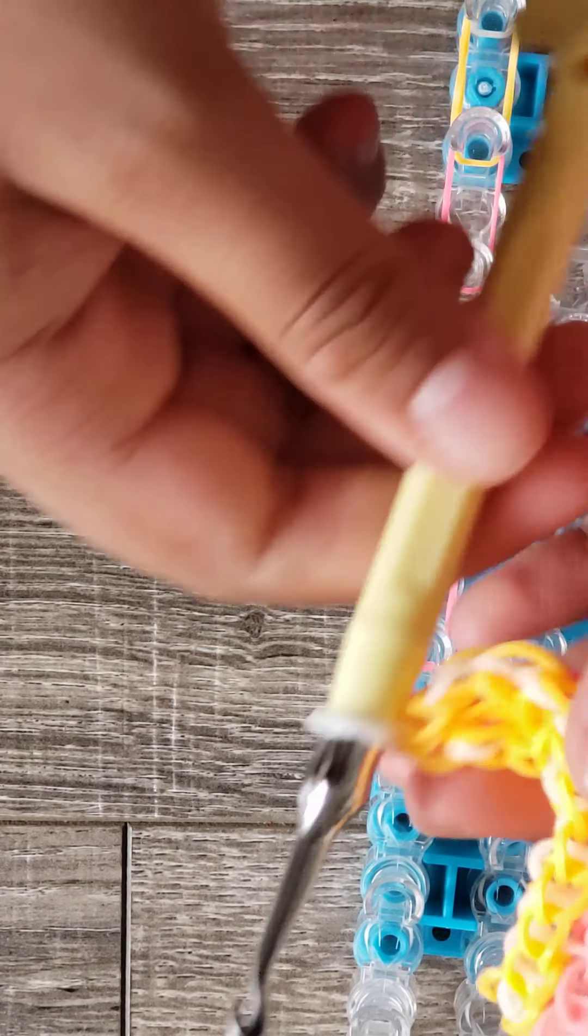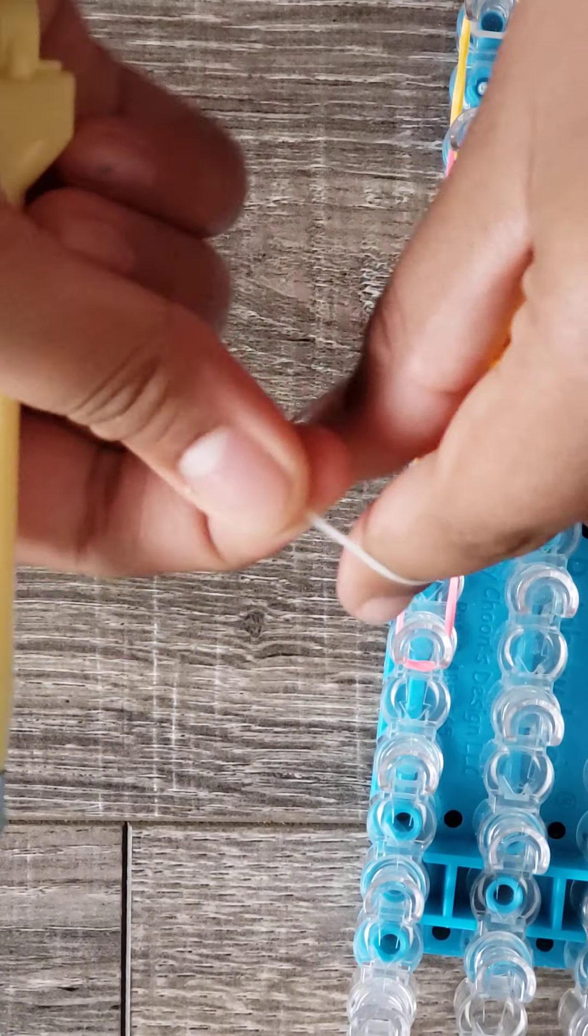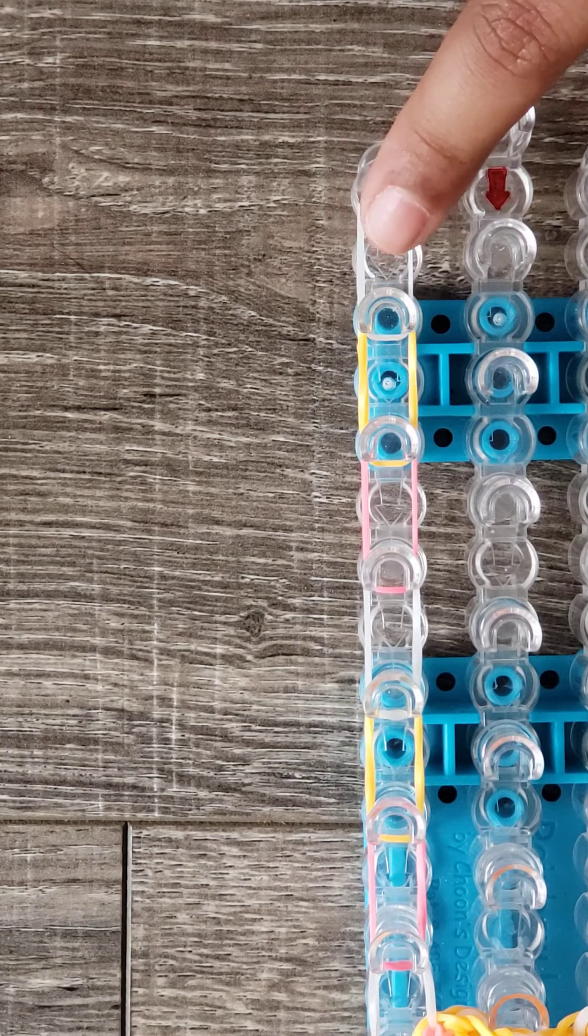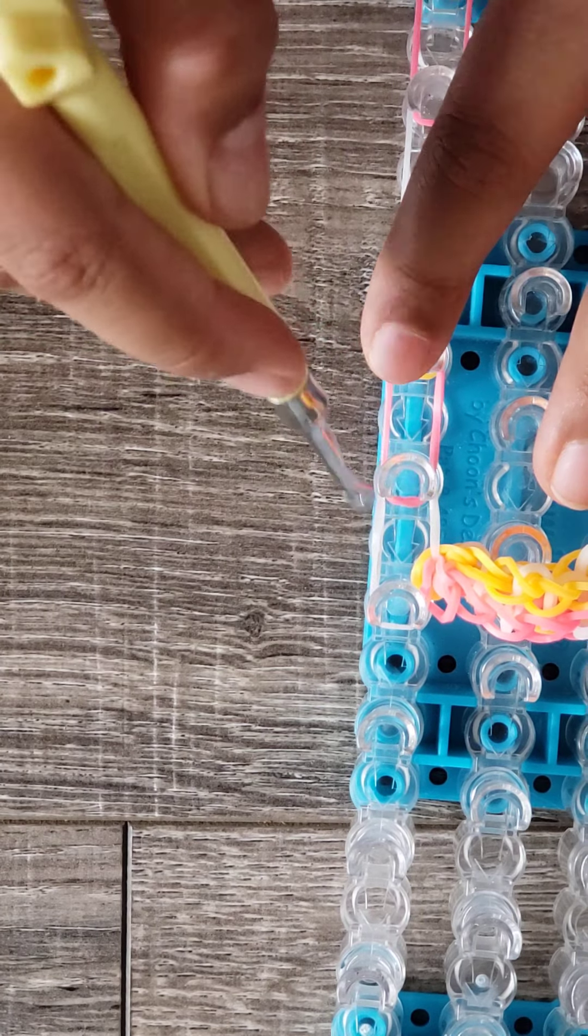Now what you're gonna do is you're gonna take the band on your hook and put it from there to there just to make your extension. So now you would see that this kind of looks like the other bands but this is already dope.